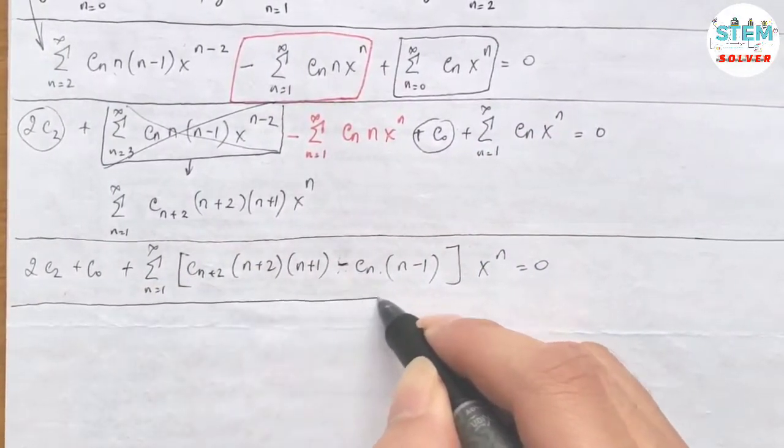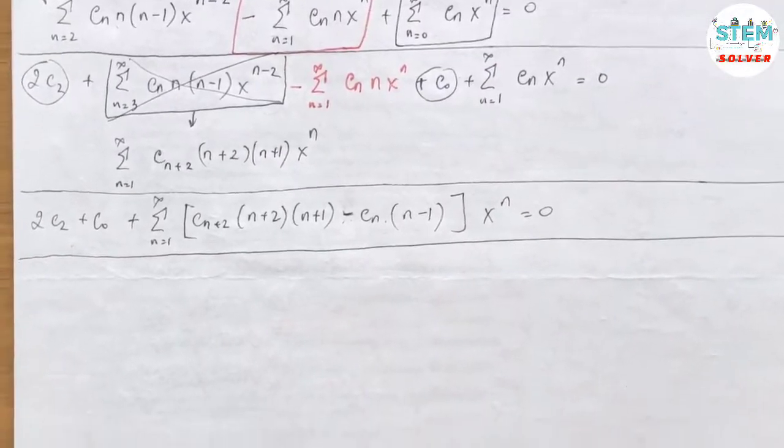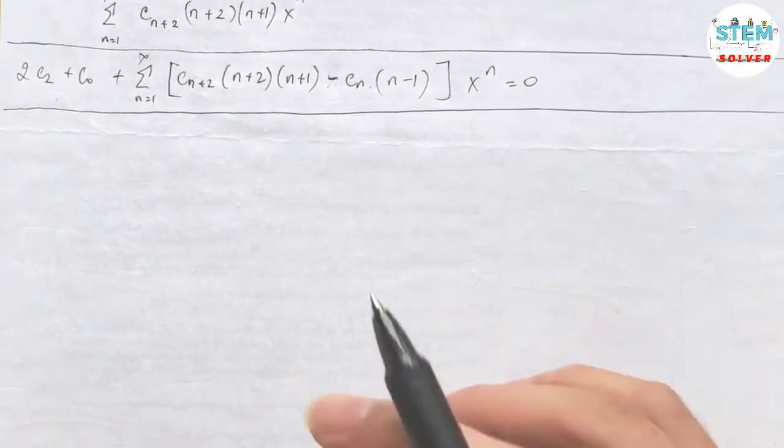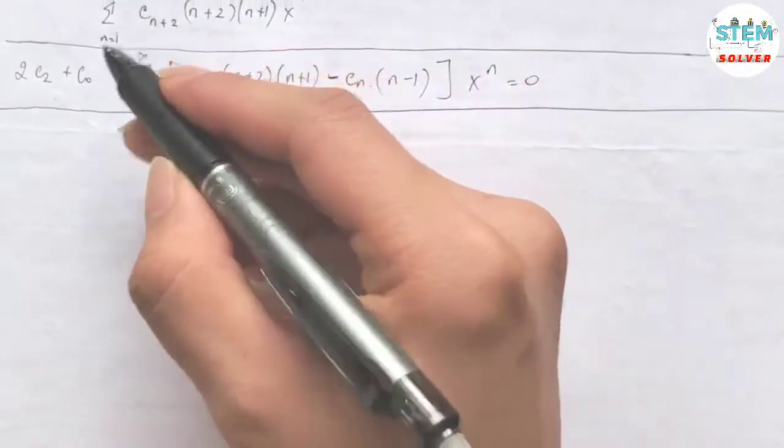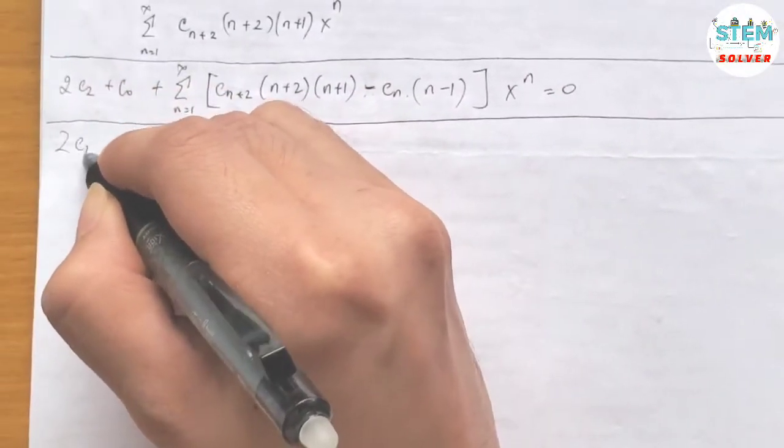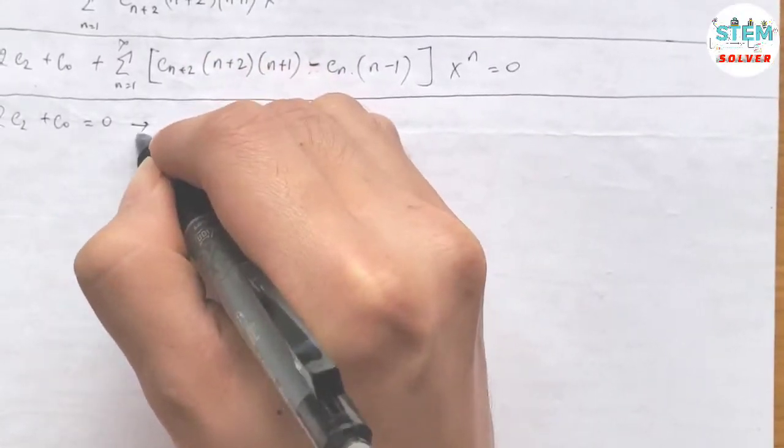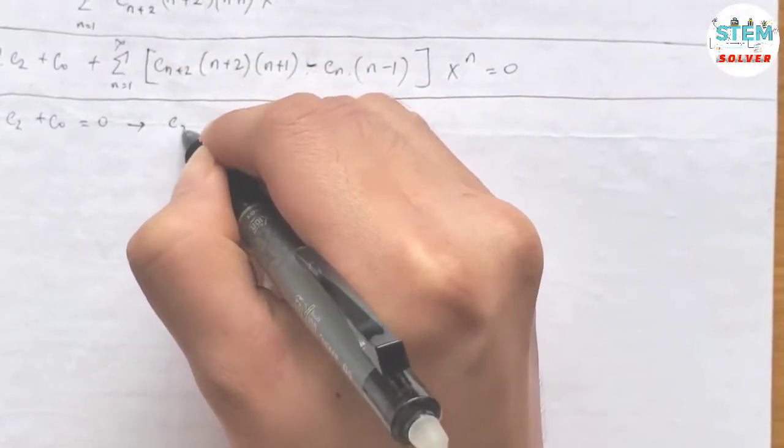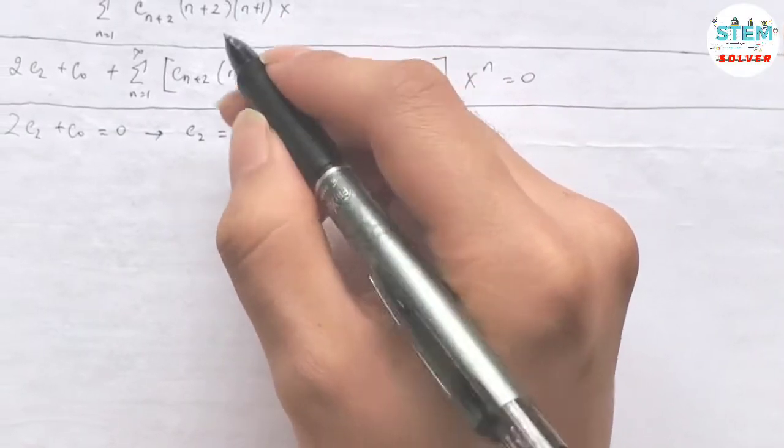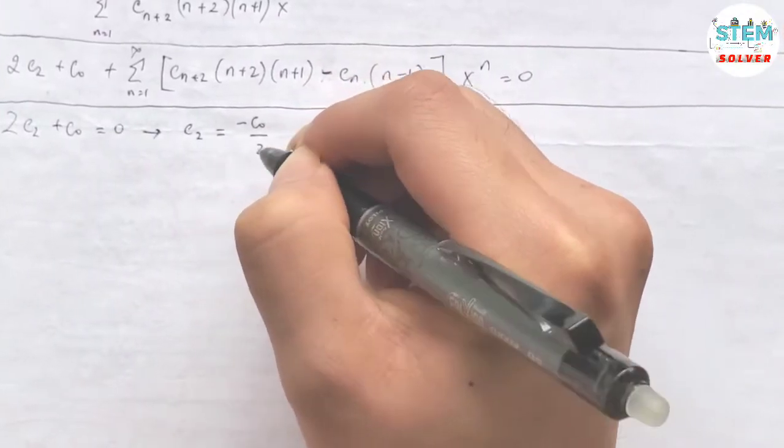Then we are going to equate coefficients. So I have 2c2 plus c0 equals 0. Then solve for the biggest c, which is c2. Then I have c2 equals negative c0 over 2.